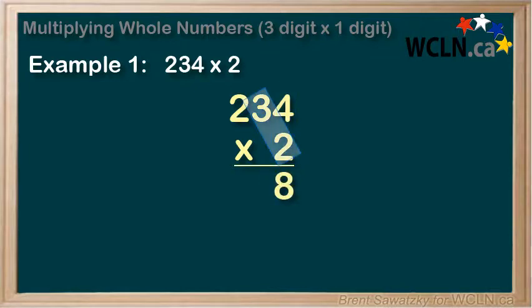Next, 2 times 3 equals 6, so we put the 6 down here. Now we note that 3 was in the 10 spot. Therefore, we were really multiplying 2 times 30, which is 60. And that's why our 6 is in the 10 spot in our answer. So far we have 68.